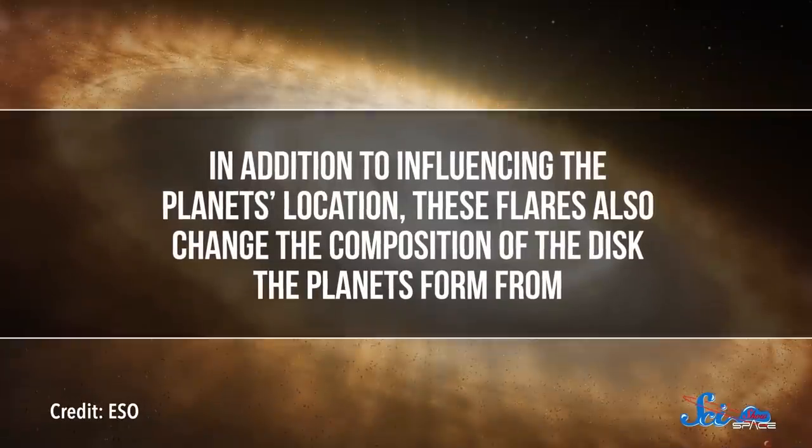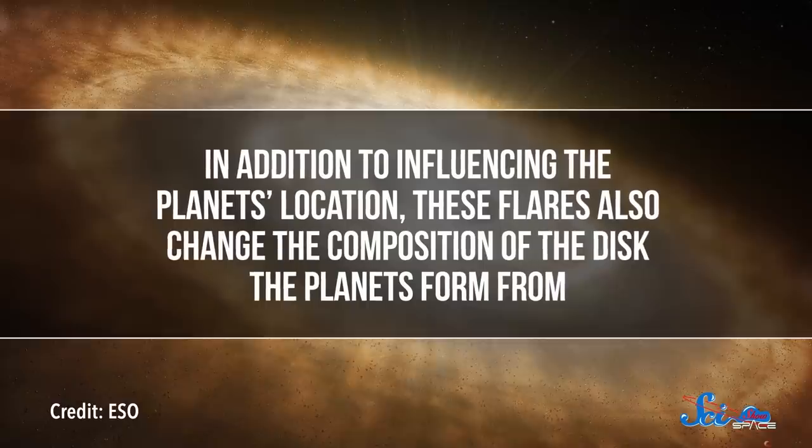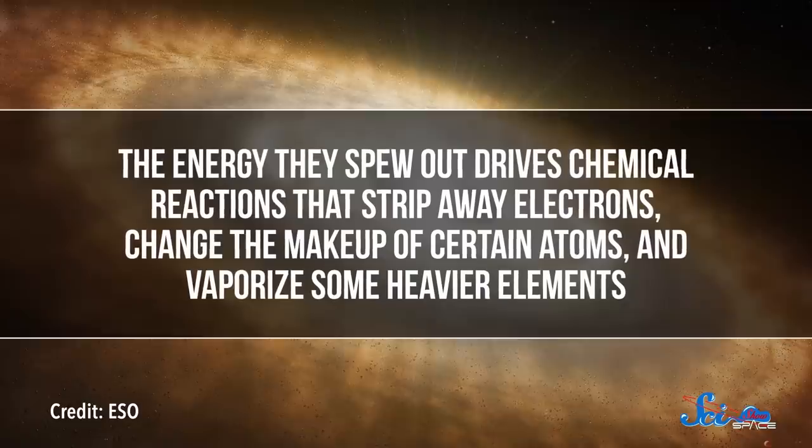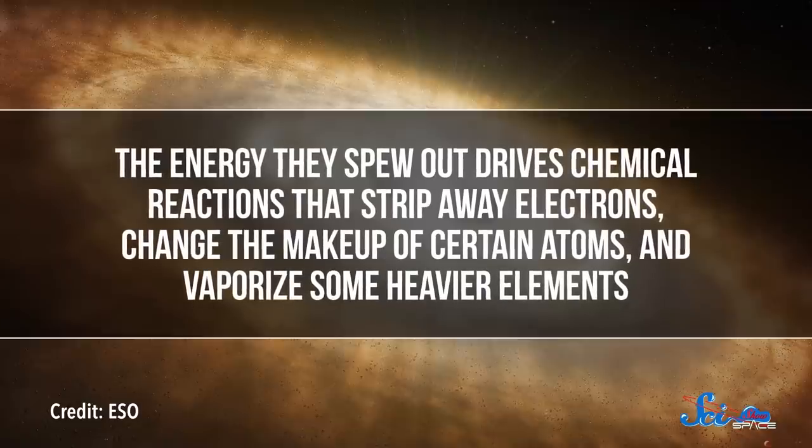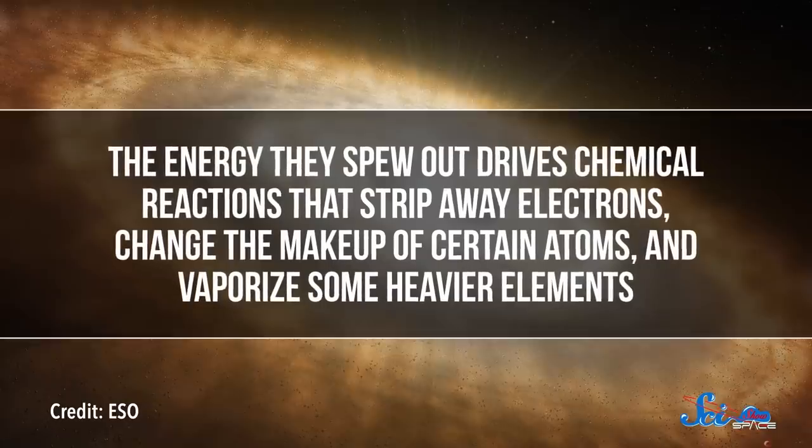In addition to influencing the planet's location, these flares also change the composition of the disk the planets form from. The energy they spew out drives chemical reactions that strip away electrons, change the makeup of certain atoms, and vaporize some heavier elements. All of which tells us that our baby sun likely had a major effect on where we are today, and what we and our planet are made out of.